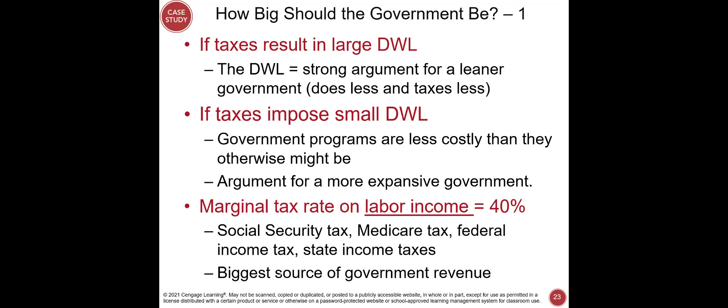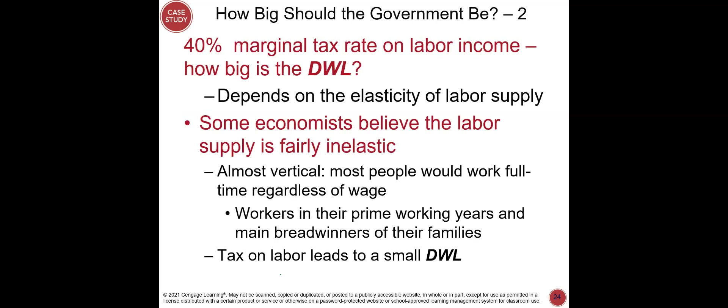In the US, the marginal tax rate on labor income is about 40%, including social security tax, Medicare tax, federal income tax, and state income taxes — the biggest source of government revenue. The question is: how big is the deadweight loss of this 40% marginal tax rate? The answer depends on the elasticity of labor supply. If wages fall due to high taxes, do workers stay full-time or leave the workforce? Economists do not agree on the elasticity of labor supply.